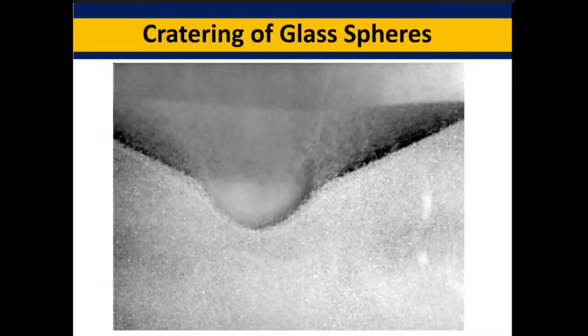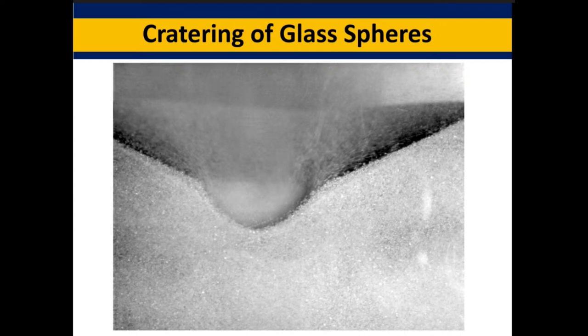When you have a cratering of glass spheres — you're shooting this jet at a particle bed — you have two features to the crater. You have an inner crater that's related to the diameter of the jet, and then in the outer crater, that angle is related to the angle of repose of those solid particles, meaning it's the natural angle particles would make with the surface in a pile.